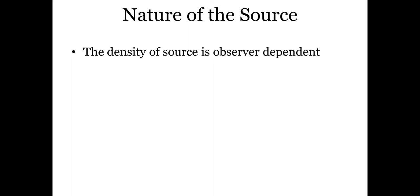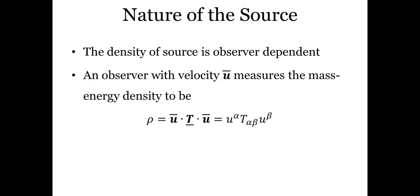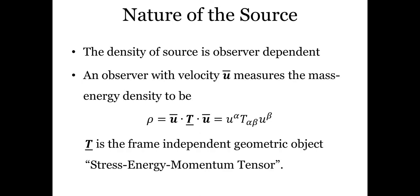If you want to find a mathematical expression for density, it looks like this. An observer with a four-velocity u — where u has four components and the index alpha and beta runs from 0 to 3 — measures the mass-energy density to be a special combination of u and a geometric object T. This T, as evident from the equation, is a second-rank tensor. T is a frame-independent geometric object known as the stress-energy-momentum tensor, which codifies the distribution of energy and momentum.